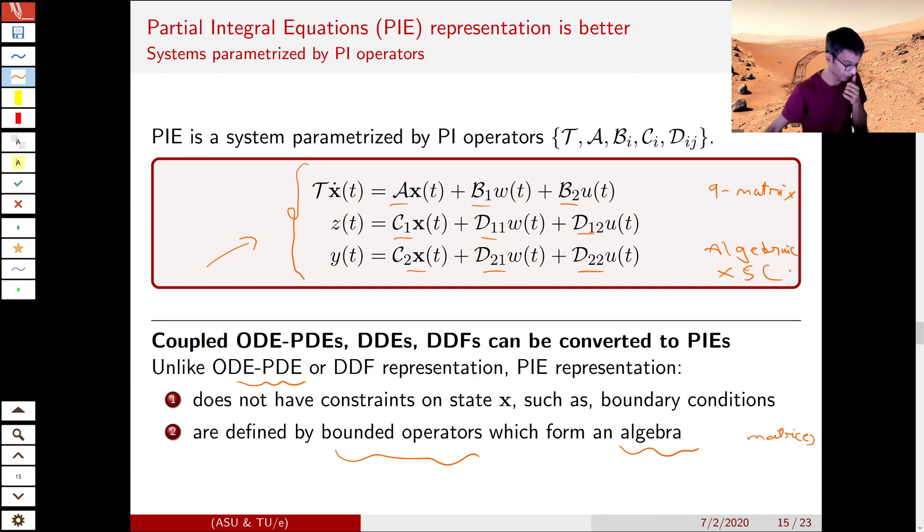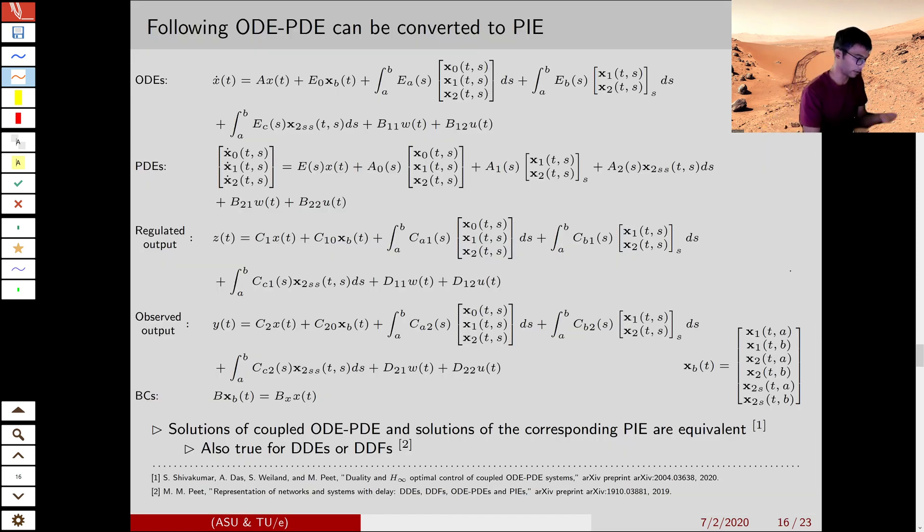So what class of PDEs can be represented in this way? That is given in this slide. Any ODE coupled with PDE that can be written in this form can be converted to PIEs, provided the boundary conditions satisfy a certain rank constraint, or we have sufficient number of boundary conditions. So in this representation, we have ODE dynamics that is impacted by the PDE state.